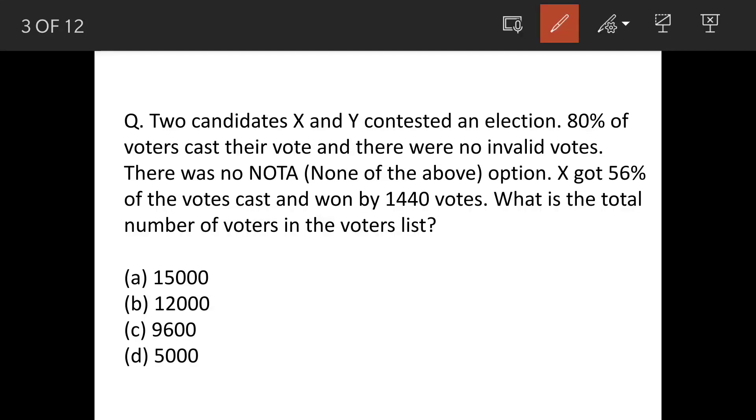There are two candidates who contest in an election. 80% of voters cast their votes. So if there were 100 total voters, only 80 have voted. There are no invalid votes or NOTA, and X gets 56% of the votes - 56% out of this 80% who voted.